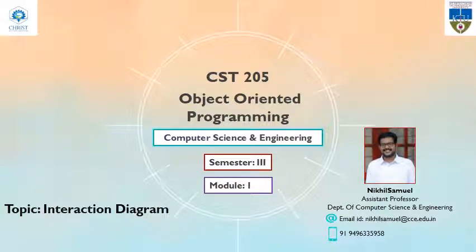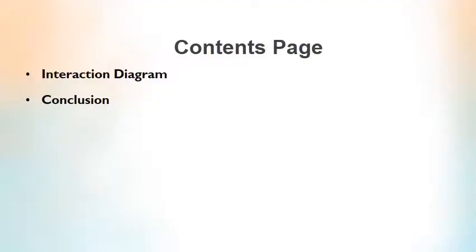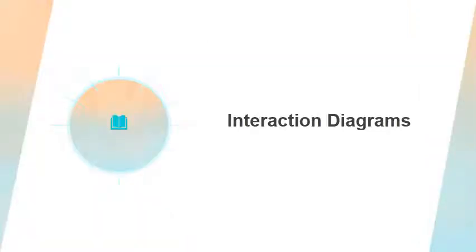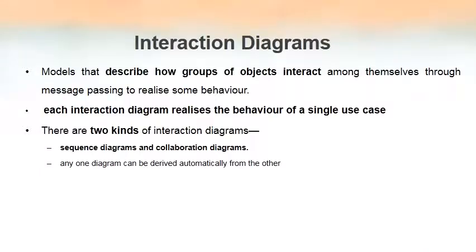Welcome to the video lecture series on object-oriented programming. In this lecture, we will be discussing interaction diagrams — another diagram that comes under UML (Unified Modeling Language). So far we have discussed class diagrams and use case diagrams. From the name itself it is clear that this diagram is going to represent how interactions between different objects take place, and how different objects pass messages between each other.